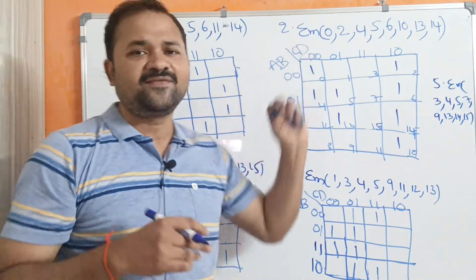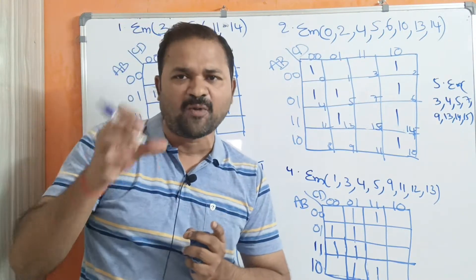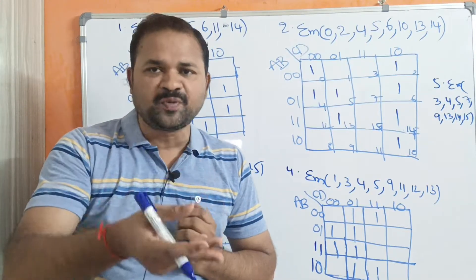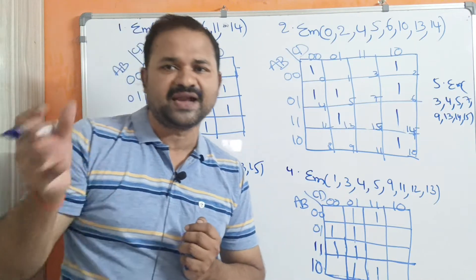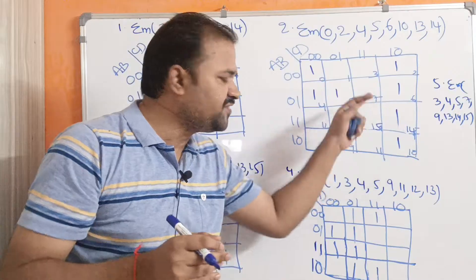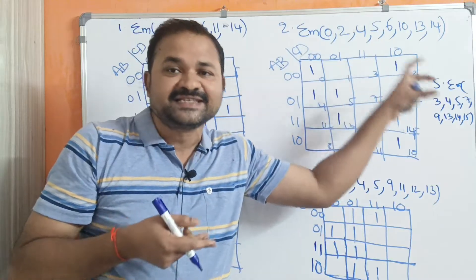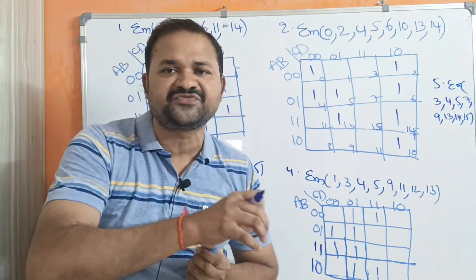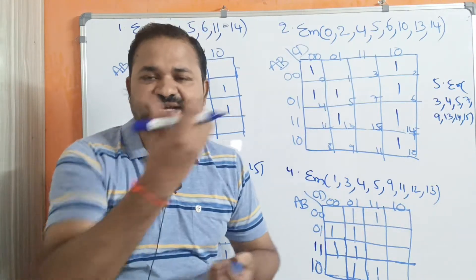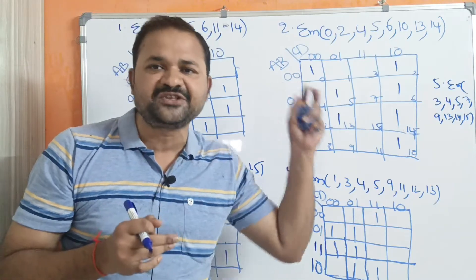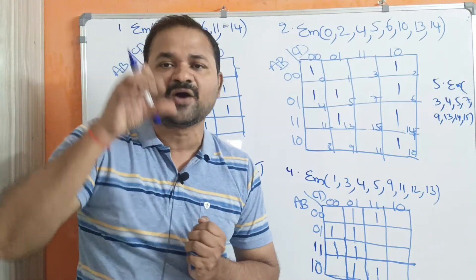While solving the problem, our aim should be that the group should be in the form of powers of 2. That means 2 power 0, 2 power 1, 2 power 2, 2 power 3, 2 power 4. We are having 16 cells, so first we have to search for a group which contains 16 cells, then 8 cells, then 4 cells, then 2 cells, then 1 cell. The group should be in the form of powers of 2 only.